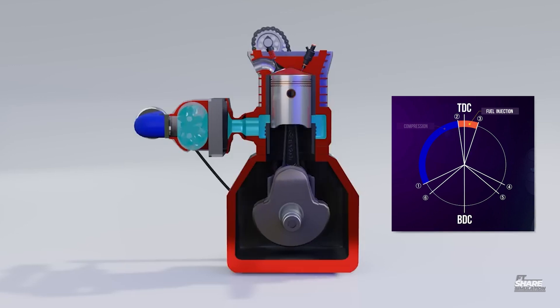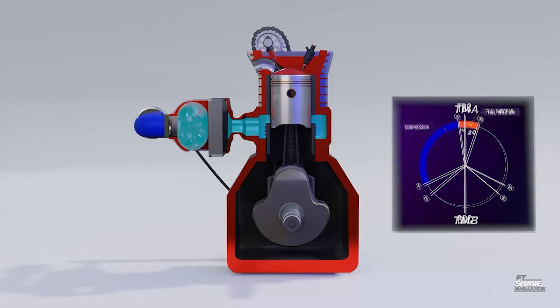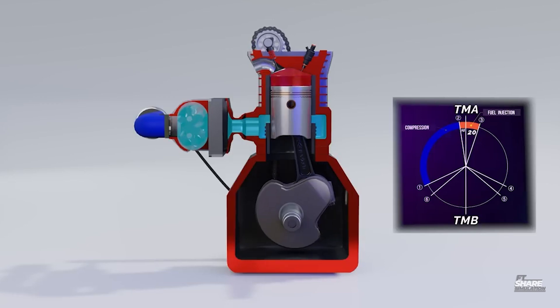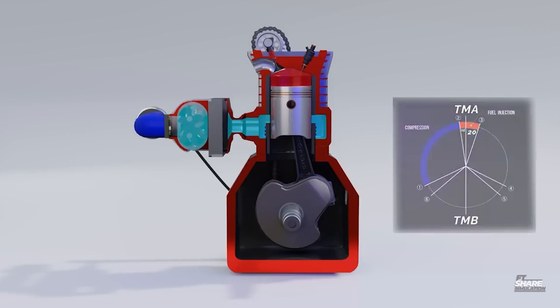When the piston reaches TDC, the fuel mixed with high pressure and high temperature air will spontaneously combust, known as auto-ignition or self-ignition. Since diesel engines do not use a spark plug, to maximize the power generated by the engine, the injector will continue supplying fuel until the crankpin on the crankshaft reaches 20 degrees from TDC.